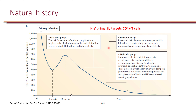Once you hit the 200 mark — CD4 less than 200 — that's when the risk of opportunistic infections becomes real. This is when you get pneumocystis pneumonia and esophageal candidiasis. As the CD4 goes even lower, less than 100, the number of opportunistic infections goes up further, including increased incidence of coccidioidomycosis, cryptococcosis, toxoplasmosis, and Mycobacterium avium complex.